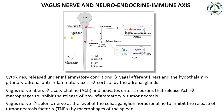The cytokines released under inflammatory conditions result from vagal afferent fiber activation of the hypothalamic-pituitary-adrenal anti-inflammatory axis, responsible for release of cortisol by the adrenal glands. The vagus nerve fibers release acetylcholine (ACh) and activate enteric neurons that release ACh. This activates macrophages to inhibit the release of pro-inflammatory TNF-alpha. The vagus nerve acts on the splenic nerve at the level of the celiac ganglion. The release of noradrenaline inhibits the release of TNF-alpha by macrophages of the spleen.